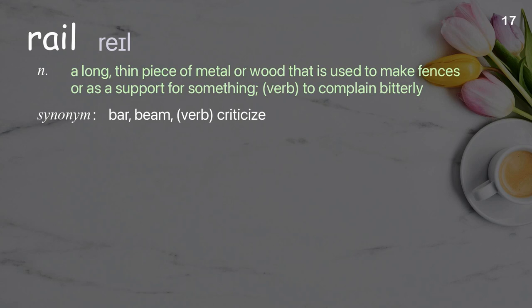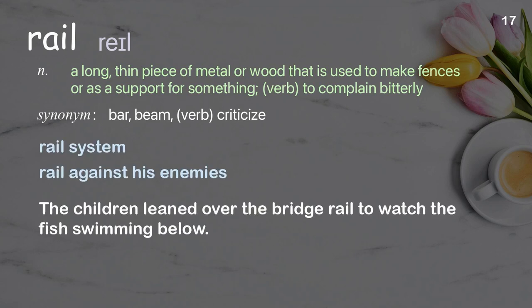Rail: a long, thin piece of metal or wood used to make fences or as a support for something. Verb: to complain bitterly. Examples: rail system; rail against his enemies; the children leaned over the bridge rail to watch the fish swimming below.